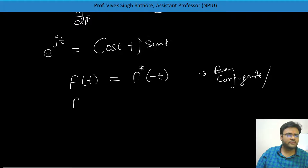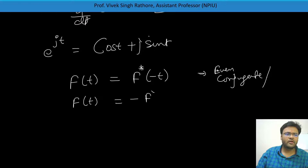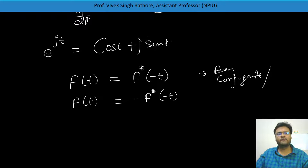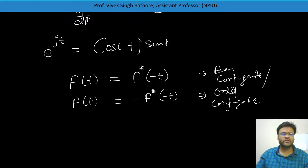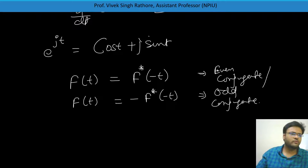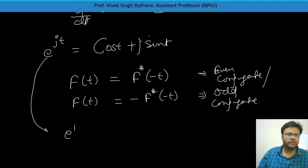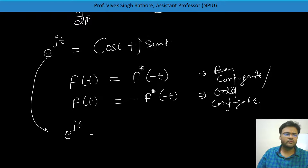Let's check e to the power jt. This signal equals cos(t) plus j sin(t) — this is called the Euler signal. For the conjugate symmetric condition: F of minus t gives e to the power minus jt. Taking the conjugate of F of minus t: wherever the j part is, we change the sign, giving e to the power plus jt. So the conjugate of F of minus t equals F(t), confirming e to the power jt is a conjugate symmetric signal.